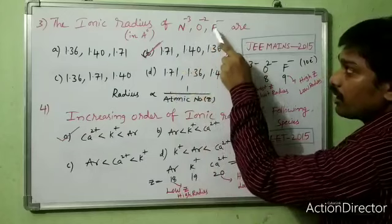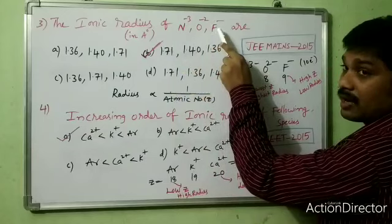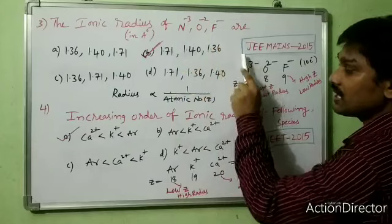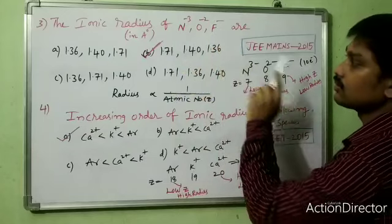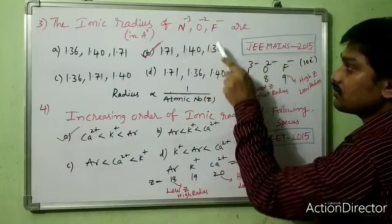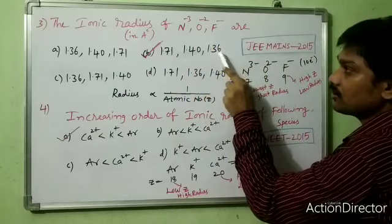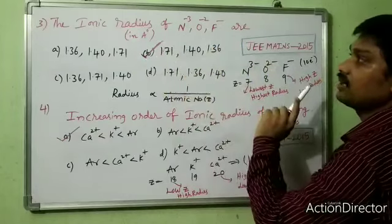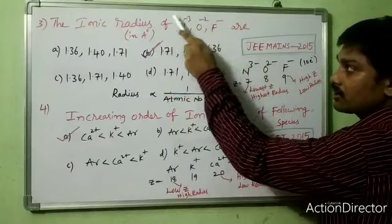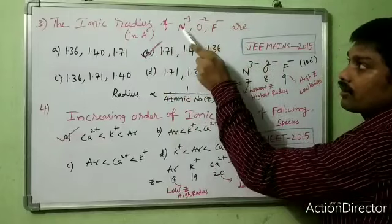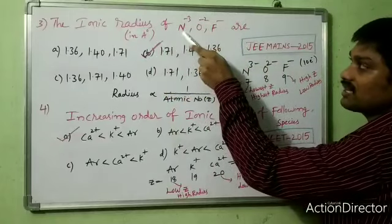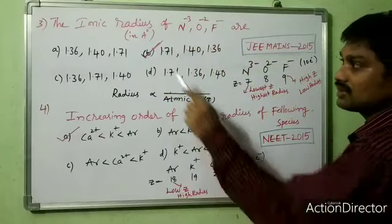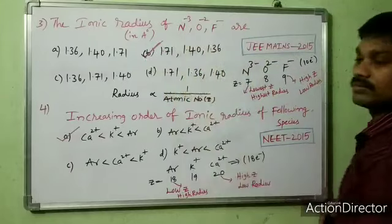Fluorine has the highest atomic number (9) among the three, so it has the lowest radius of 1.36 Å. Therefore, option B is the correct option for the ionic radii of the isoelectronic species N³⁻, O²⁻, and F⁻.